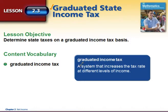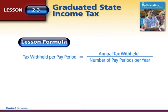A graduated income tax is a system that increases the tax rate at different levels. From chapter one we had to figure out what our salary was per pay, so we're going to do the same thing. This formula is going to look similar to that. We're going to take our tax withheld per pay period — that's the annual tax that is going to be withheld, which we'll calculate today on the graduated level — and then divide it by the number of pay periods per year.